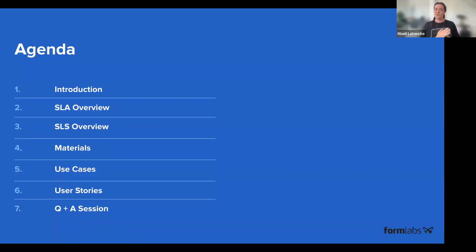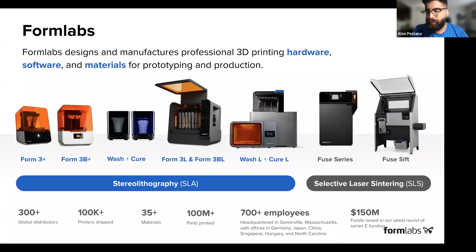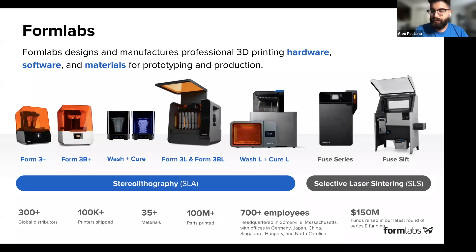We'll also cover use cases and user stories. Here's a quick overview of what Formlabs currently offers. We have a wide selection on the SLA front: our desktop systems with Form 3+, our larger format SLA systems with Form 3L and 3BL, and our selective laser sintering system, the Fuse, and its complementary post-processing system, the Sift. Our main goal is to provide the hardware, software, and materials for everything from prototyping to short-run production of end-use parts. We've been doing this for about a decade, with 100,000 printers sold and 100 million prints to date.